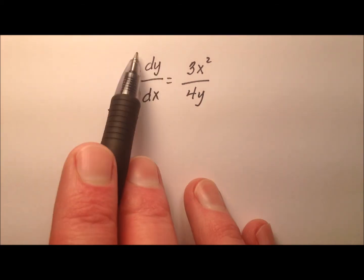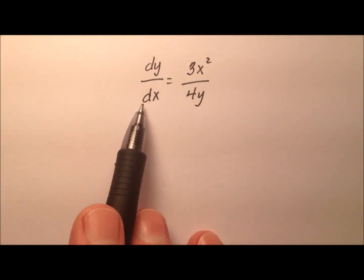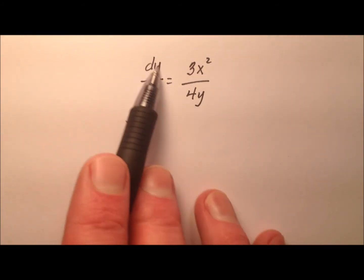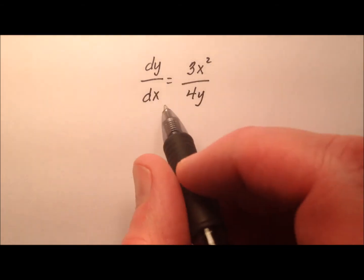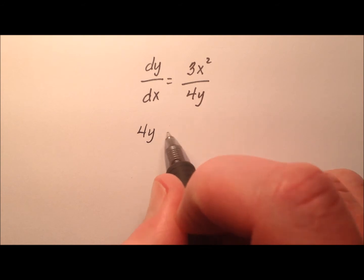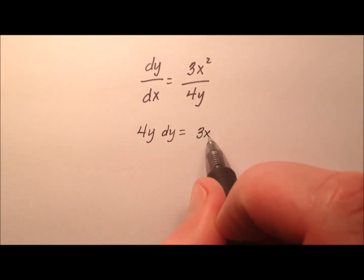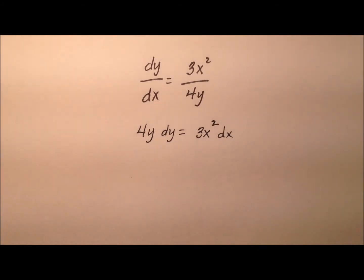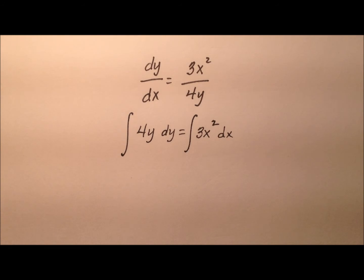So in this first example, it looks like I can just do cross products and set them equal to each other. And that will facilitate my separating the y's and the x's out. So 4y times dy and that will be equivalent to 3x² dx. So it looks like everything's separated out. I have my dy on my left, my dx on my right. So let's go ahead and integrate both sides of this equation.